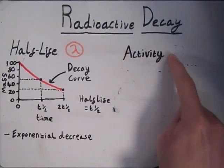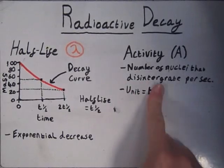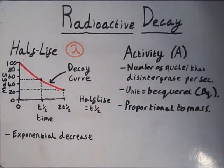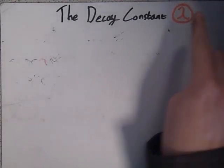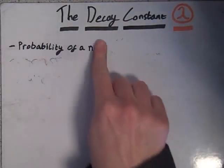Number two is activity, which measures the number of nuclei that disintegrate per second. In other words, the rate of change of the number of nuclei. It is also proportional to the mass, and since mass decreases over time, so does activity. Number three is the decay constant, which represents the probability of an individual nucleus decaying per second.